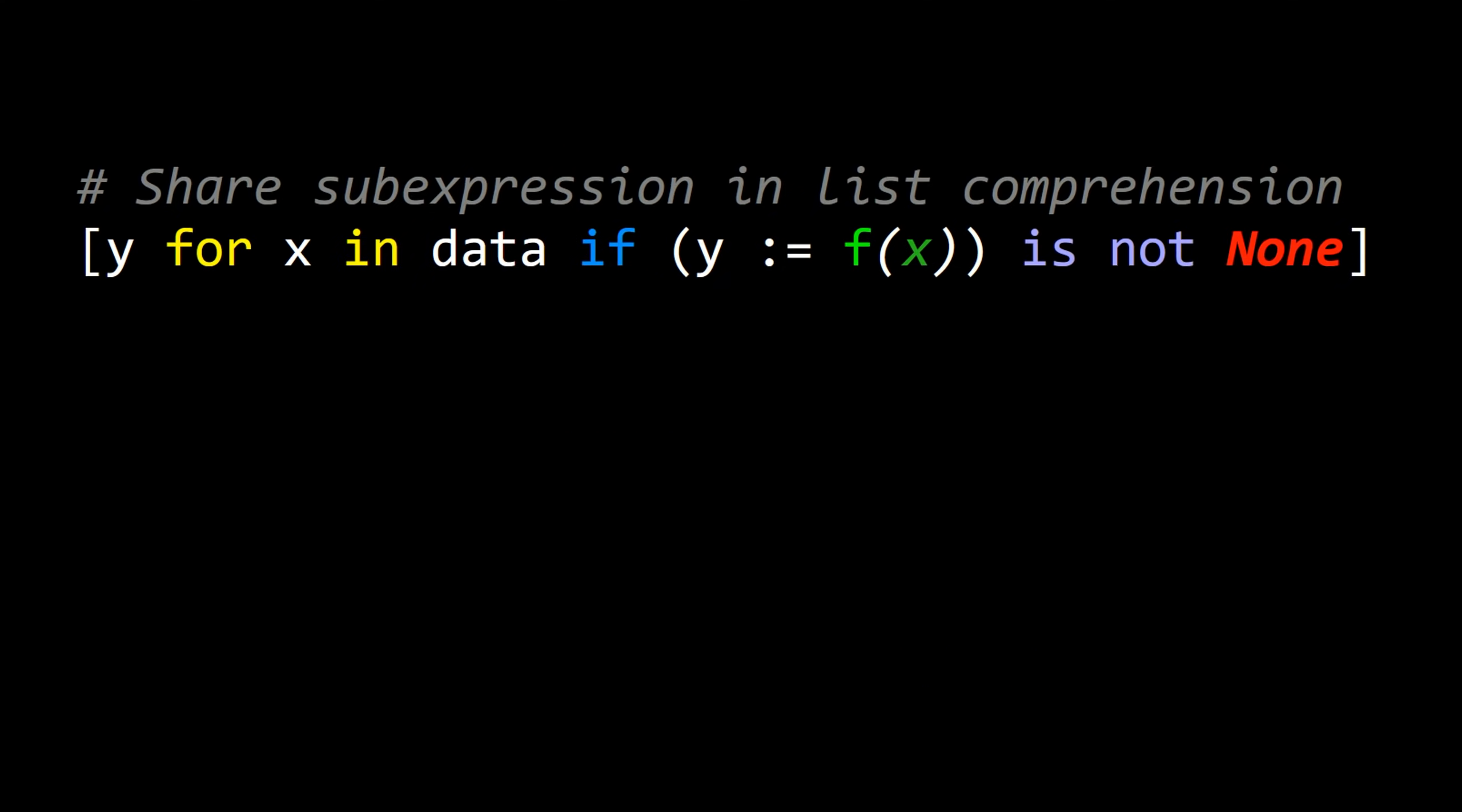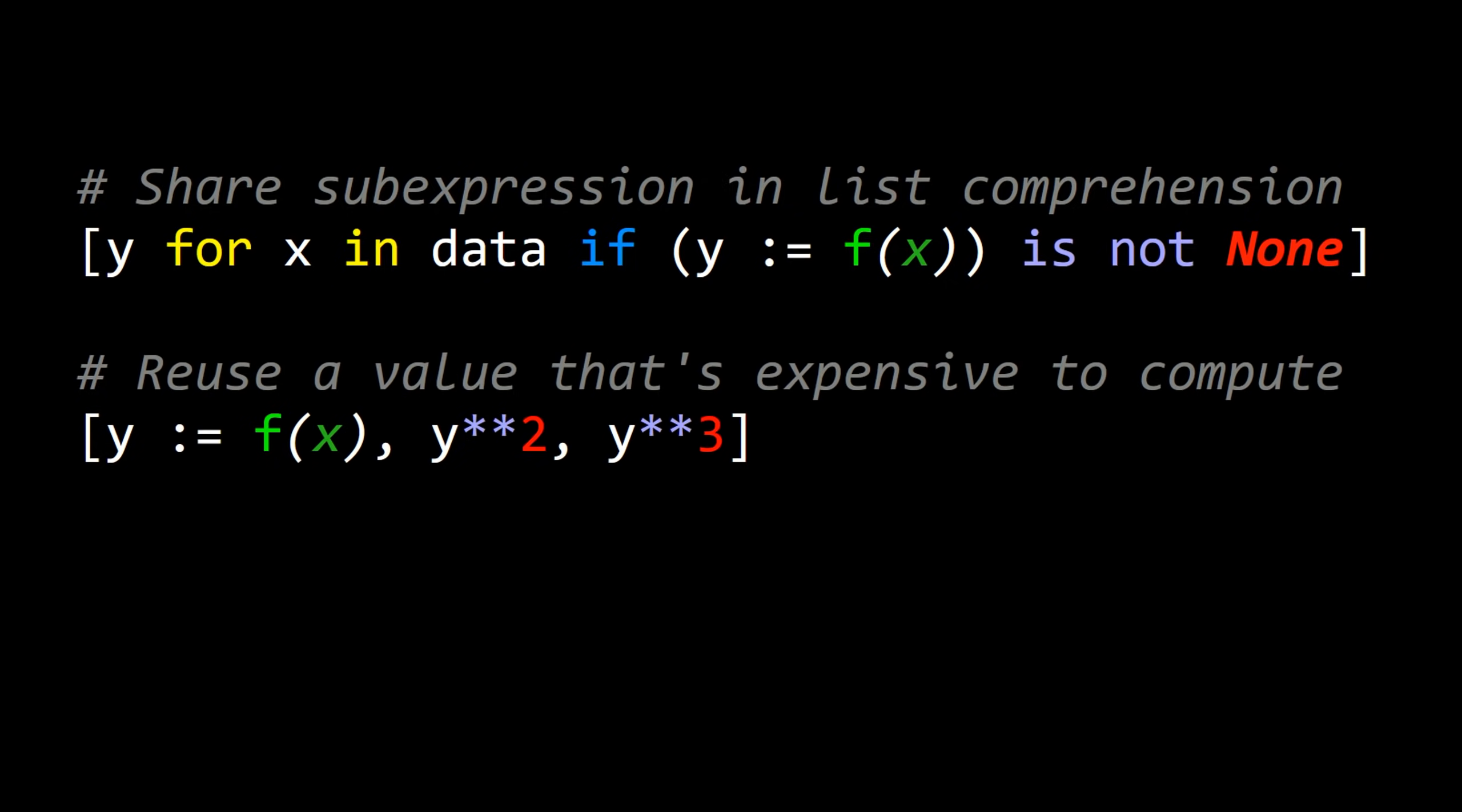Other use cases in list comprehensions, you can share sub-expressions. Like in the filter, you can assign f of x to y and then reuse that y in the output of the comprehension. You can also, in a list, reuse the value. For example, if it's expensive to compute, so you can compute f of x once, assign it to y, and then reuse y in the rest of the list definition.